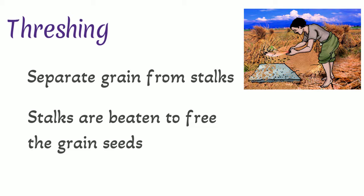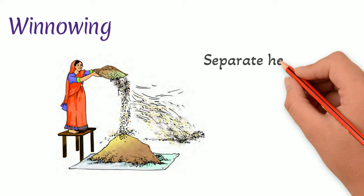Third, winnowing. Winnowing is used to separate heavier and lighter components of a mixture by wind or by blowing air.